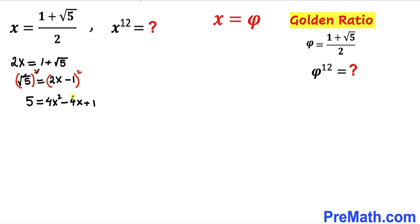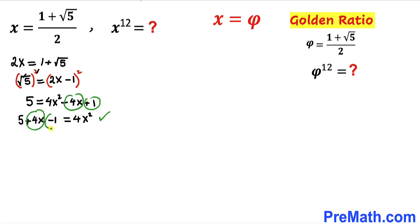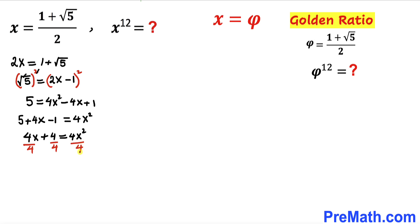Moving the 4x and 1 to the other side: negative 4x becomes positive 4x and positive 1 becomes negative 1. Combining like terms gives 4x plus 4 equals 4x². Since the equation is divisible by 4 throughout, dividing every term gives us x² equals x plus 1. Let's call this Equation 1.